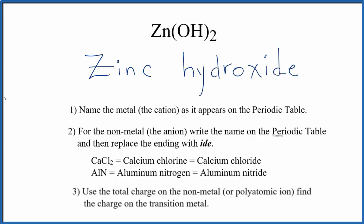Zinc, though, if we look at the periodic table, zinc is a transition metal. So we do have to think about whether we need parentheses with the Roman numeral to show its charge.